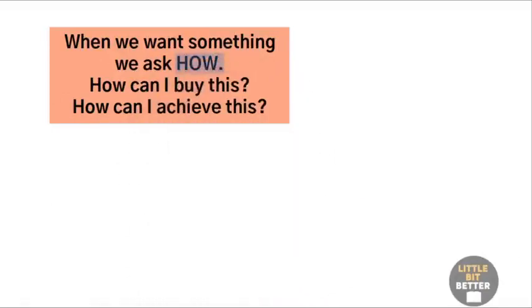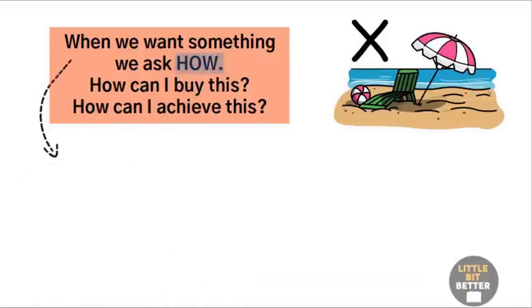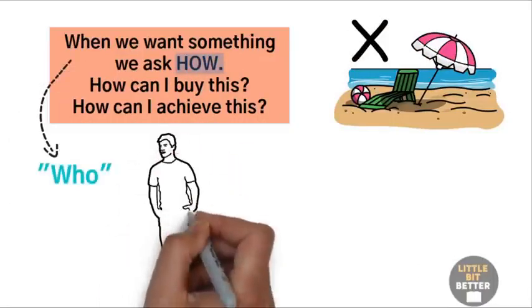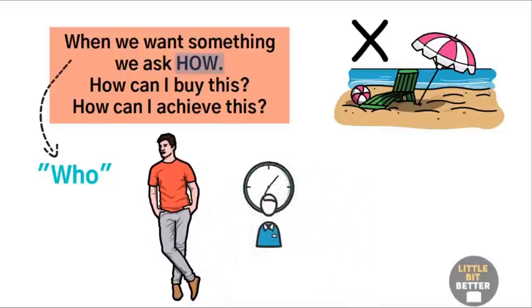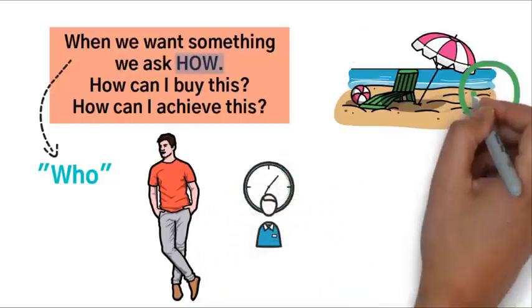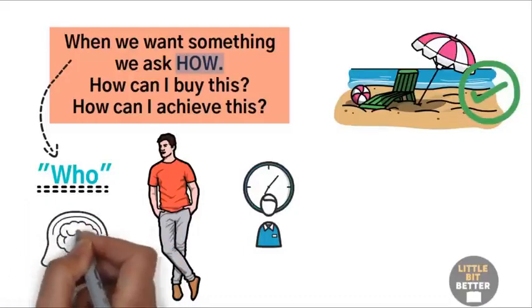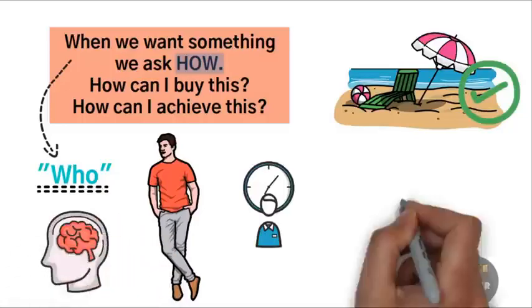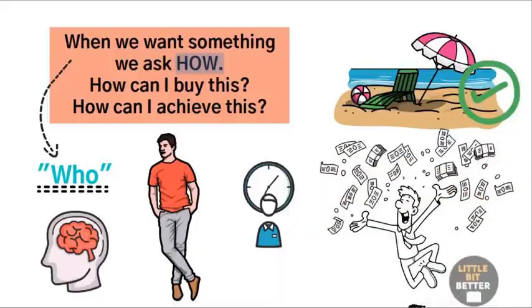Asking how would have cost Richie his entire summer vacation. In Richie's case, the who was his dad. He gave Richie an idea that helped Richie to earn the money he wanted in a considerably shorter time and enjoy his summer vacation. That is the power of working with who. You instantly get access to knowledge, insights, and expertise that you currently lack. Working with who reduces your effort, increases the quality of the end result, and most importantly, frees up your time.